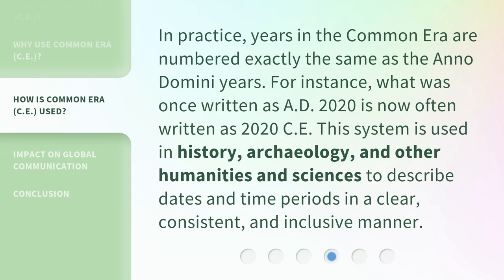In practice, years in the Common Era are numbered exactly the same as the Anno Domini years. For instance, what was once written as AD 2020 is now often written as 2020 CE. This system is used in history, archaeology, and other humanities and sciences to describe dates and time periods in a clear, consistent, and inclusive manner.